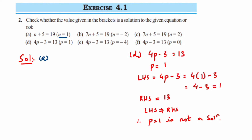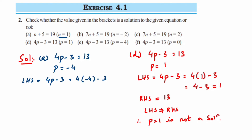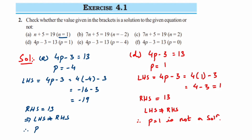The fifth question is 4P minus 3 is equal to 13, and P=-4. LHS is 4P minus 3 — substitute: 4 times minus 4 minus 3, which is minus 16 minus 3. Since both signs are negative, we add to get minus 19. The RHS is 13. Clearly LHS is not equal to RHS, so therefore P=-4 is not a solution.